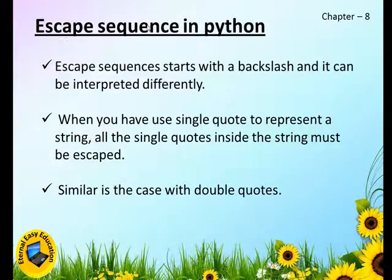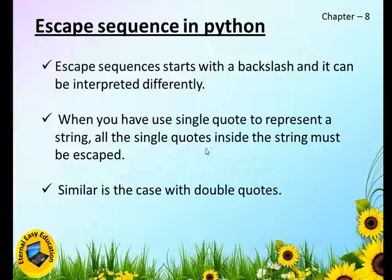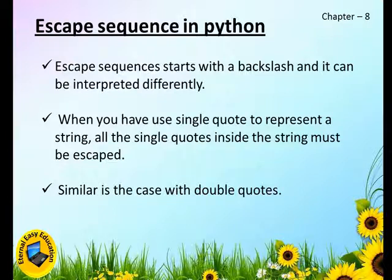Escape sequences start with a backslash and are interpreted differently. When you use single quotes to represent a string, all single quotes inside the string must be escaped — similarly for double quotes. Sometimes you may want to use only single quotes as the string delimiter but also need a single apostrophe inside the string. In that case we can use an escape sequence.